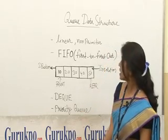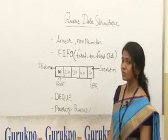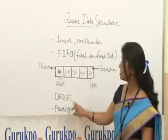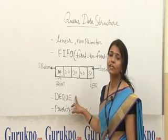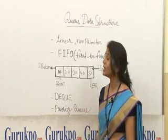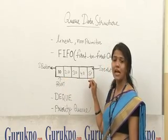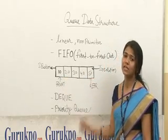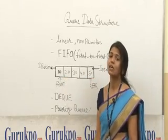There is another type of queue structure called DEQ, that is double-ended queue, in which insertion of an item and deletion of an item takes place on both ends.